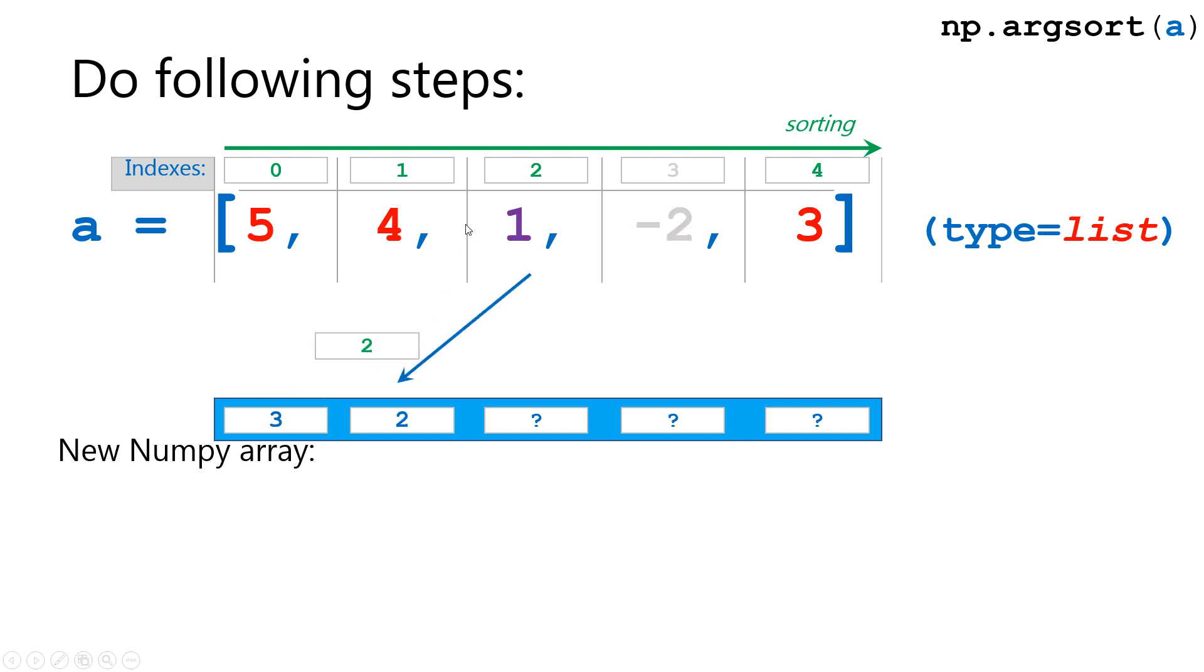The next higher value is 1, with index equals 2, so we have to move index 2 to the second location. The next higher value is 3, with index of 3 is 4, so we have to move index 4 to the next location in our result array. The next value is 4, with index 1, so we have to move index 1 to the next location. So far we have [3, 2, 4, and 1].